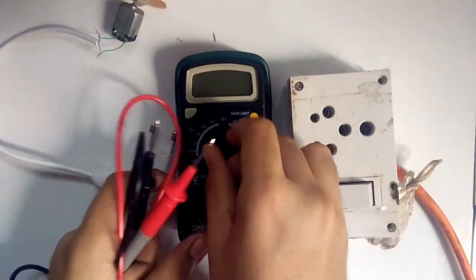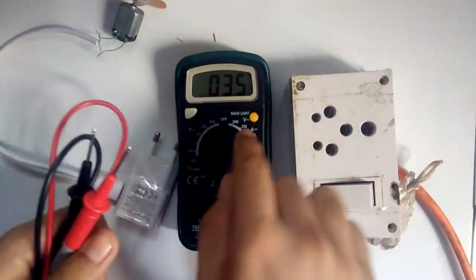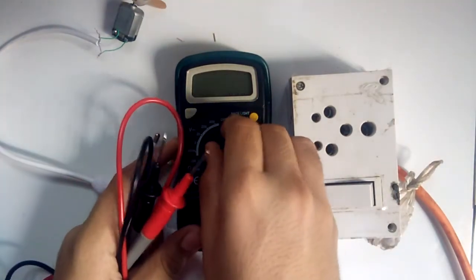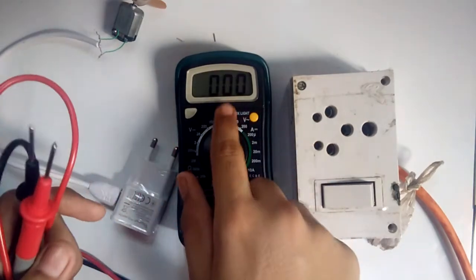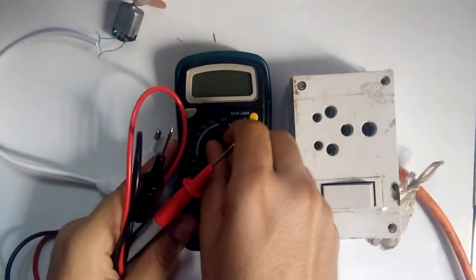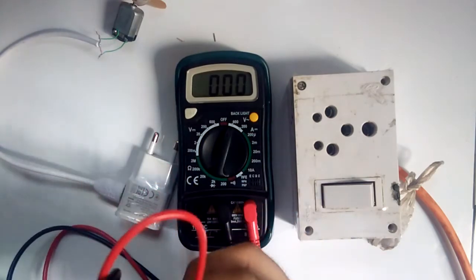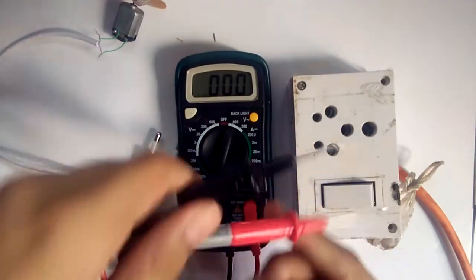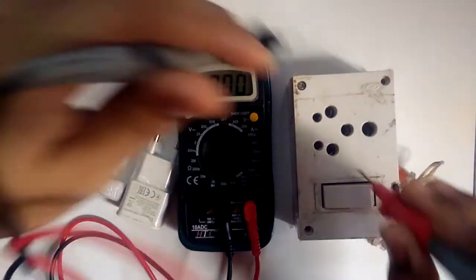On the board and in the multimeter on 600V. Okay, you can see it is on 600V. Now let's check it out. What is the voltage?